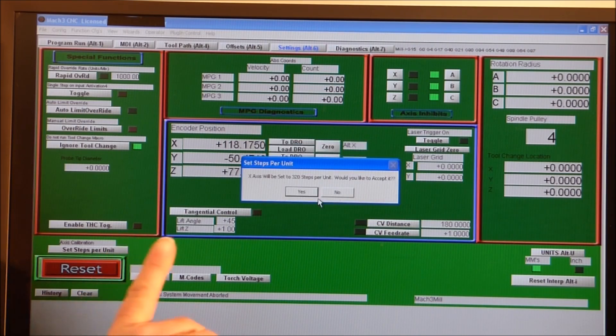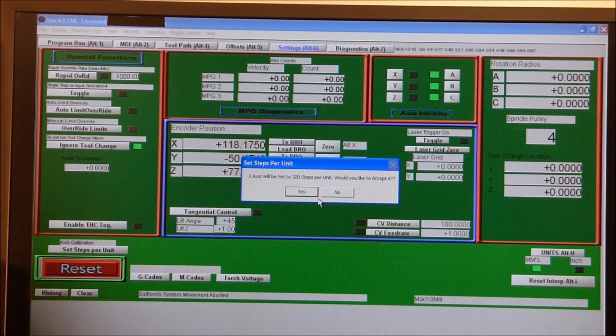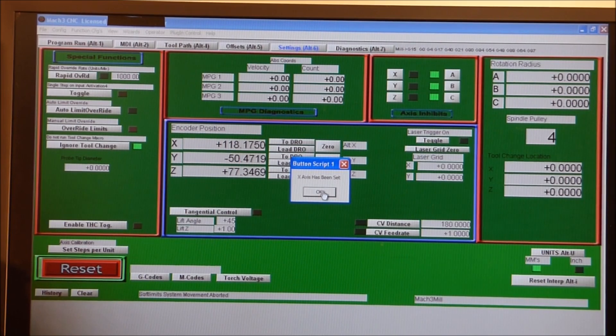Mach 3 has worked it out that the steps per with these lead screws and these motors for this machine to be absolutely perfect should be 320 steps. You accept that and OK it.